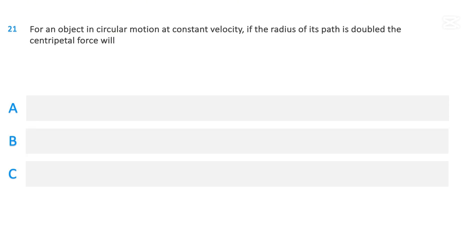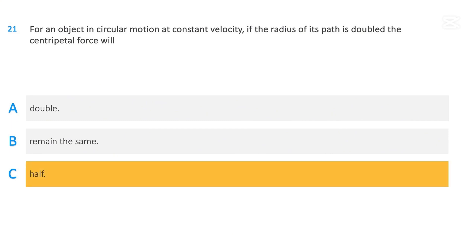For an object in circular motion at constant velocity, if the radius of its path is doubled, the centripetal force will: double; remain the same; or halve. The correct answer is halve.